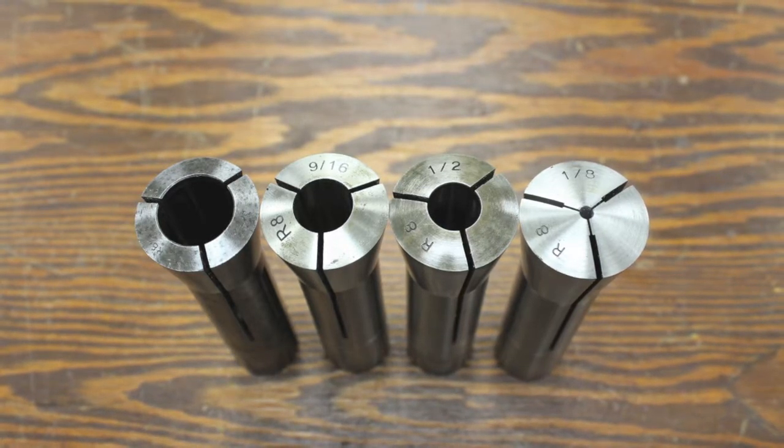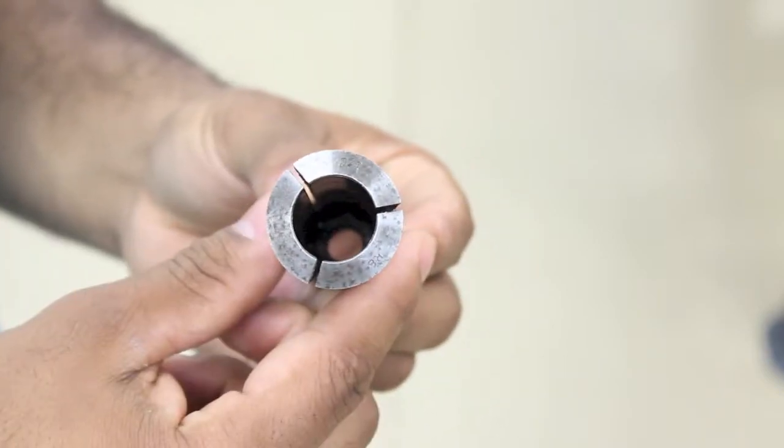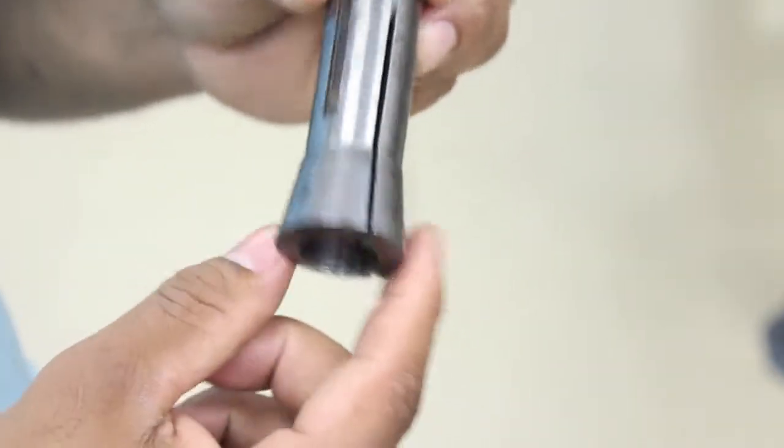Take a look at this collet. Notice that the collet has three slits machined into it. When force is applied from the outer surface of the collet, the diameter of the hole shrinks.